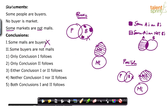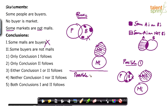When a conclusion satisfies the basic diagram, we have to check the possible diagrams. If it doesn't satisfy the basic diagram, it is definitely wrong — like conclusion 1. But conclusion 2 satisfies the basic diagram, so we check the possible diagrams. In possible diagram 1, malls are not overlapped with markets, and 'some buyers are not malls' is satisfied. Some buyers are not malls — I can always choose some buyers and say these are not malls.